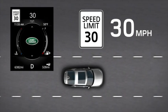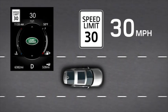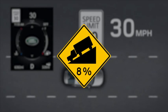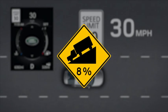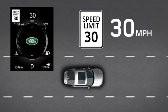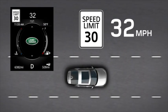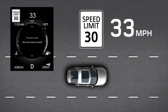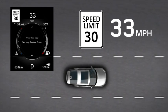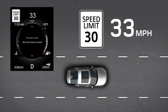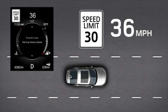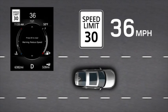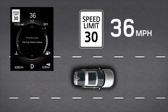When ASL is active, vehicle speed may increase in certain conditions, for example when travelling downhill. If the vehicle speed rises by more than 2 miles per hour above the detected speed limit, a warning message is displayed. If the vehicle speed rises by more than 5 miles per hour above the detected speed limit for 4 seconds, a chime also sounds.